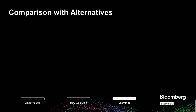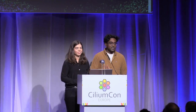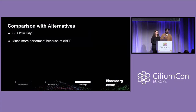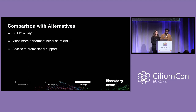Another thing to talk about is comparisons with alternatives — shout-out to Istio Day happening later as well. When we were evaluating options, we decided to go with Cilium not only because of its host-based routing policies, but because of how performant it was with eBPF. Having it in the kernel itself is a game changer, and I'm super excited to see more projects starting to implement this, like Calico, Falco, and it seems like there's more week by week. Another thing to mention is the access to a lot of professional support — Cilium has a really robust market of experts for troubleshooting and debugging, which we've really benefited from.